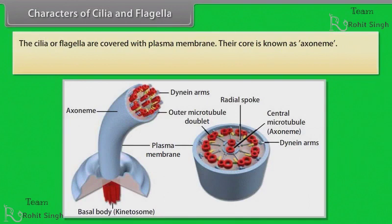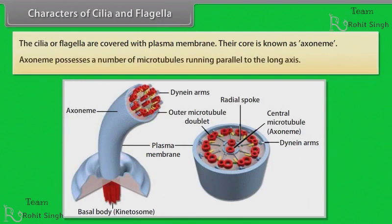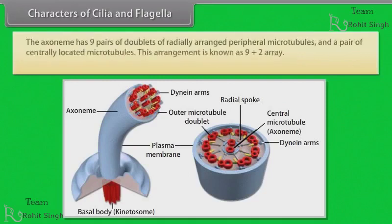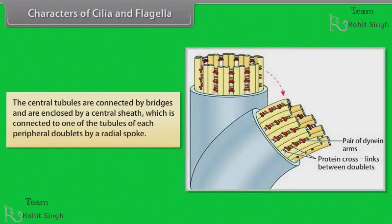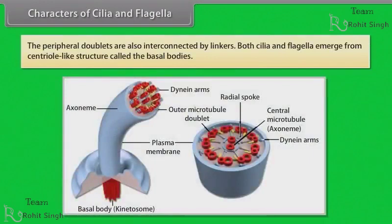Their core is known as the axoneme. The axoneme possesses a number of microtubules running parallel to the long axis. The axoneme has 9 pairs of doublets of radially arranged peripheral microtubules and a pair of centrally located microtubules. This arrangement is known as the 9+2 array. The central tubules are connected by bridges and enclosed by a central sheath, which is connected to one of the tubules of each peripheral doublet by a radial spoke. The peripheral doublets are also interconnected by linkers. Both cilia and flagella emerge from centriole-like structures called the basal bodies.